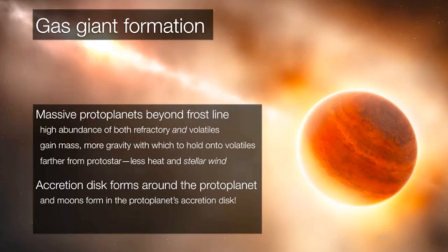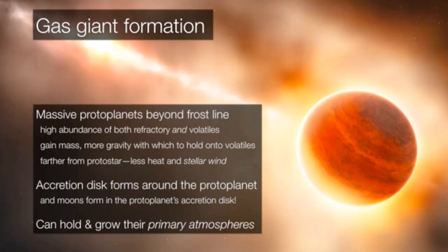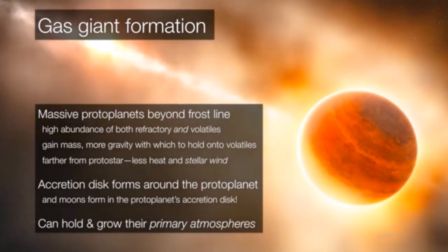This allows these massive outer solar system protoplanets to grow what are called their primary atmospheres. Primary atmosphere means that the atmospheres of Jupiter and Saturn, for example, are the same atmospheres that they pretty much formed with.